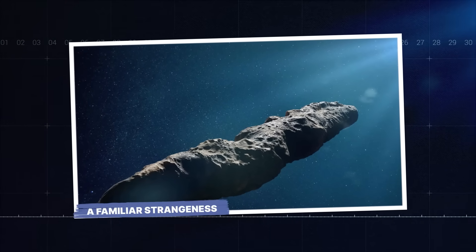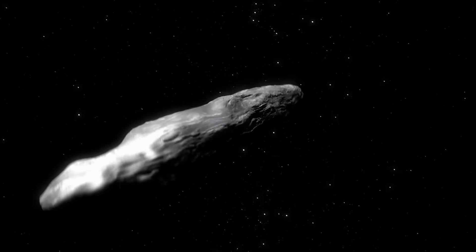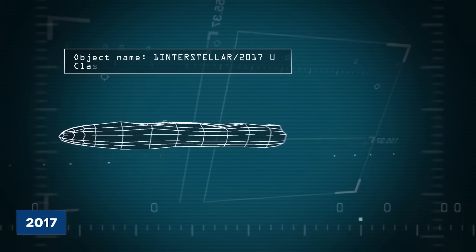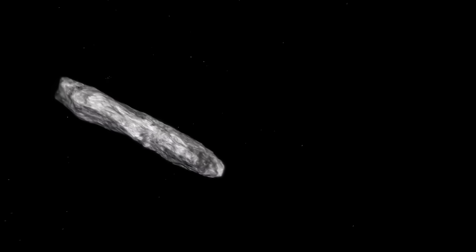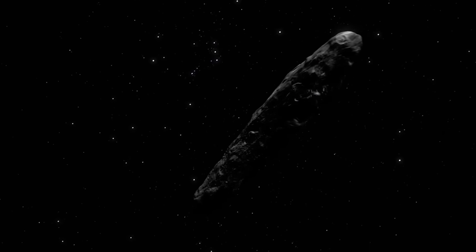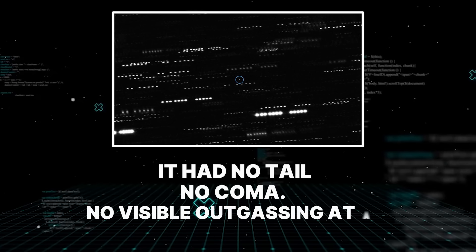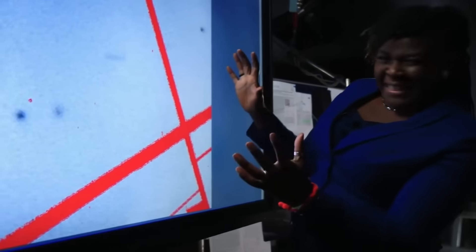A familiar strangeness. Before 3I Atlas, there was 1I Oumuamua. The first interstellar object ever detected, Oumuamua shot through our solar system in 2017 and left a trail of unanswered questions that still haunt astronomers today. It was small, shaped like a cigar or a pancake, and it was moving in a way that gravity couldn't explain. Just like Atlas, it displayed non-gravitational acceleration. But here's the thing that made Oumuamua so spooky. It had no tail, no coma, no visible outgassing at all. Yet something was pushing it. This led to a storm of controversy and speculation.